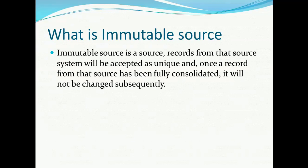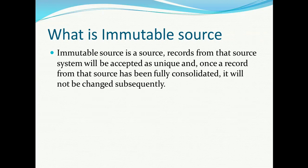What is an immutable source? An immutable source is a source from which records will be accepted as unique. Once a record from the source has been fully consolidated, it will not be changed subsequently. Whenever you configure any source for immutable row ID object, that source is called an immutable source. Records coming from that source are accepted as unique as soon as they enter into the MDM system, so no need to run match and merge on such records. The consolidation indicator of such records is always one.